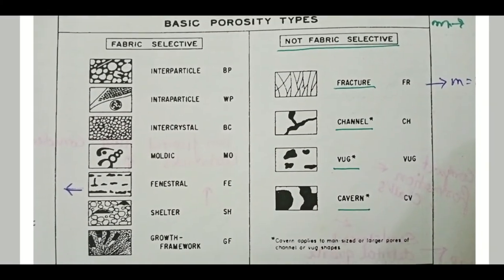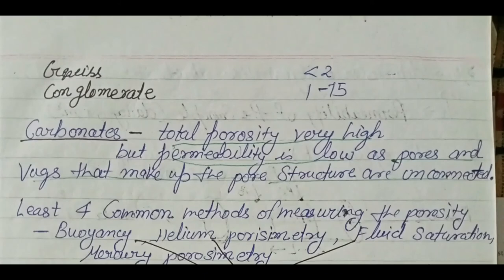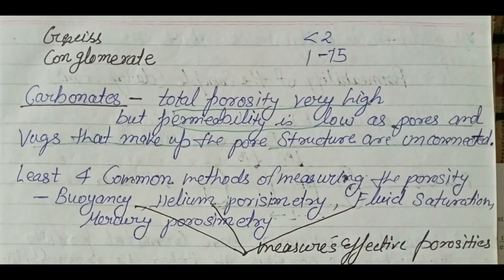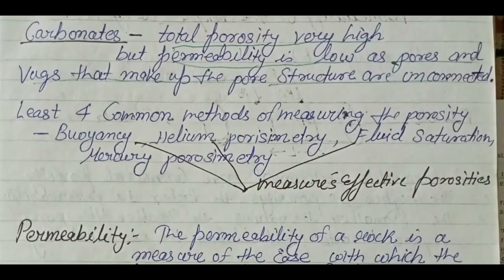Carbonates have relatively high porosity but low permeability because pores and vugs making up the pore structure are unconnected. There are four ways to measure porosity: buoyancy, helium porosimetry, fluid saturation, and mercury porosimetry — just remember the names; detailed methods are not critical for examinations.